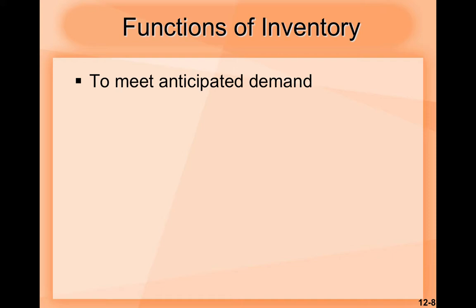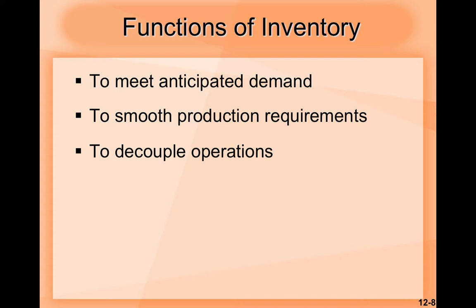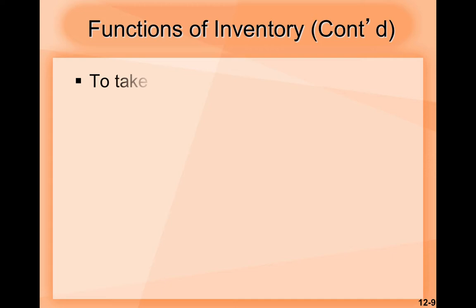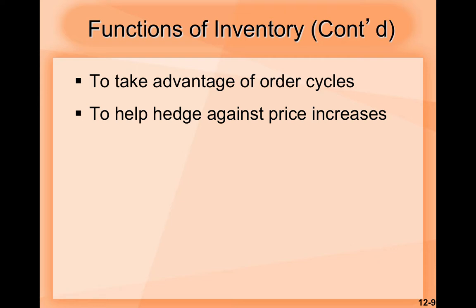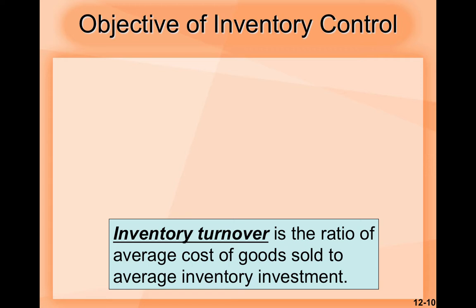Now let's look at some functions of inventory. The first is to meet anticipated demand; the second is to smooth production requirements; the third is to decouple operations; the fourth is to protect against stock-outs; the fifth is to take advantage of order cycles; the sixth is to help hedge against price increases; and the seventh is to permit operations.